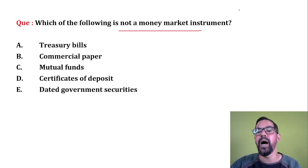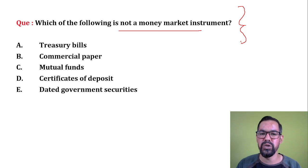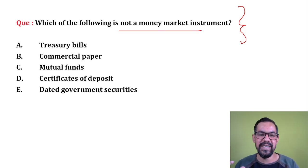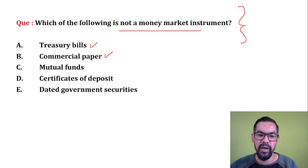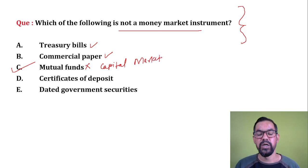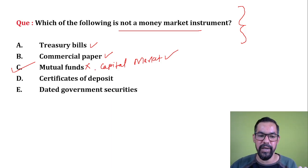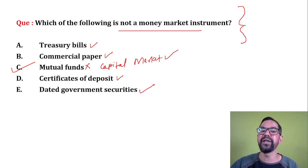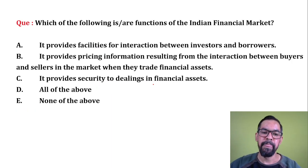Which of the following is NOT a money market instrument? Treasury bills are part of the money market. Commercial paper is part of the money market. Mutual funds are NOT part of the money market — they are part of the capital market, being a combination of equity and debt, both of which are long-term securities in the capital market. Certificate of Deposit is part of the money market. Dated government securities are also part of the money market. So option C — mutual funds — is the correct answer.